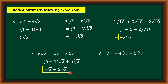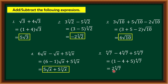Number five: ⁴√7 - 4·⁴√7 + 5·⁴√7. We have similar radicals, which is ⁴√7. We get the numerical coefficients 1, -4, and +5. So 1 - 4 + 5: first 1 - 4 = -3, then -3 + 5 = 2. Therefore, our final answer is 2·⁴√7.